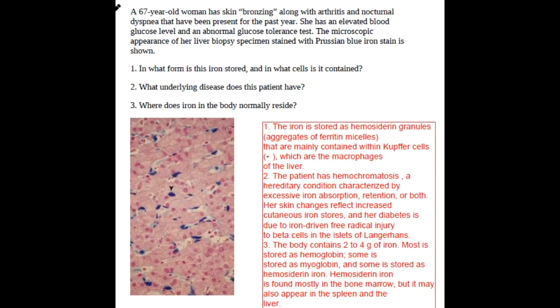Hello friends, welcome to a new lecture. A 67-year-old woman has skin bronzing along with arthritis and nocturnal dyspnea that has been present for the past year.